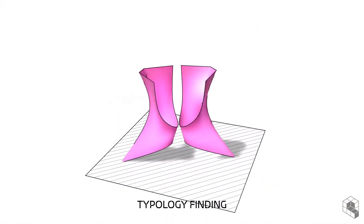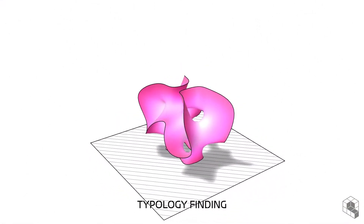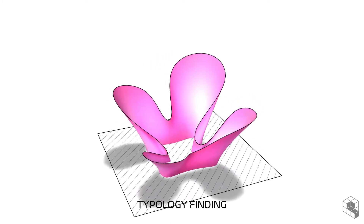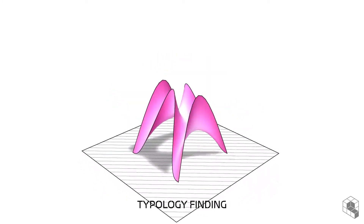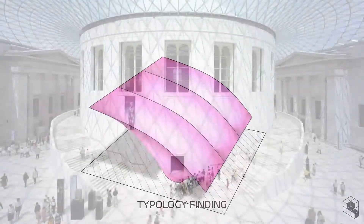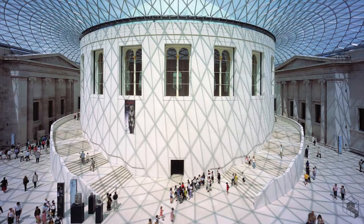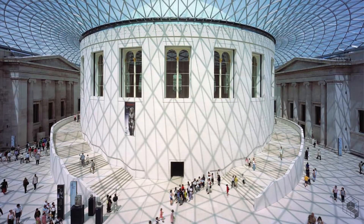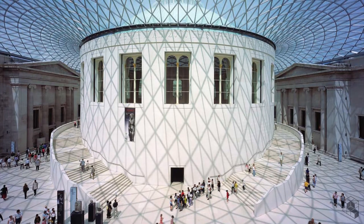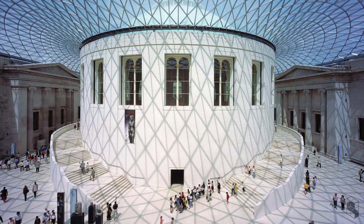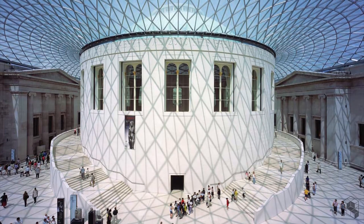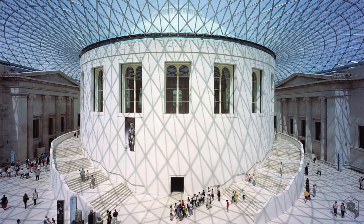Other applications of the kangaroo physics library include the initial conceptualization of several vaulted structures. Daniel Piker, the author of Kangaroo Library and part of Forster & Partners, mentions the use of the kangaroo engine in designing the tessellated roof over the British Museum in London.